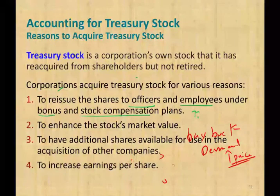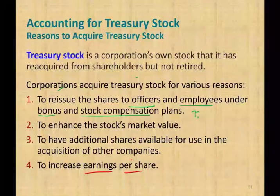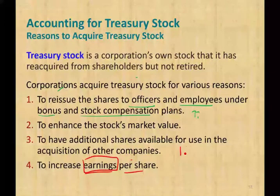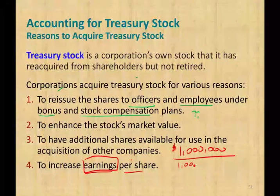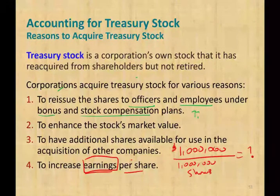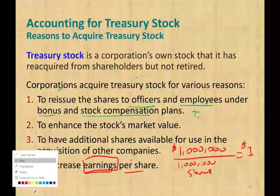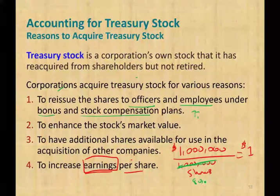Another reason to do a buyback is to increase earnings per share. Earnings per share is how much each share gets in terms of earnings. For example, if the company earned $1 million and has 1 million shares outstanding, each shareholder gets $1 per share. If we reduce the shares from 1 million to 800,000, earnings per share will go up. So to increase earnings per share, companies will buy back their own stock.